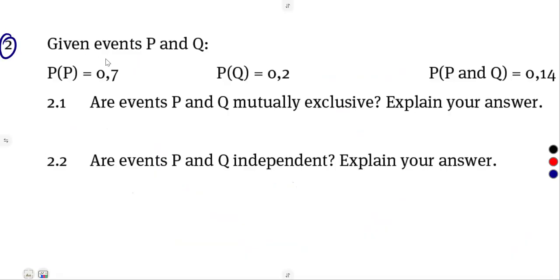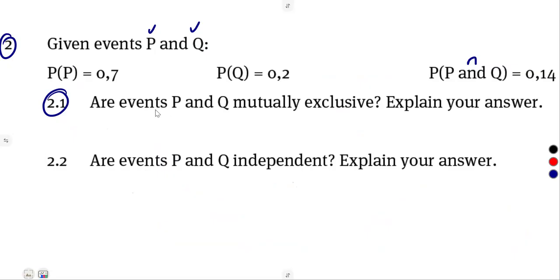On number two, we have a question: given events P and Q, the probability of P is 0.7, the probability of Q is 0.2, and the probability of P and Q is 0.14. On question 2.1, you are being asked: are these events P and Q mutually exclusive?